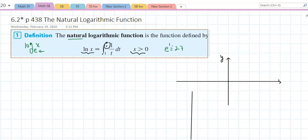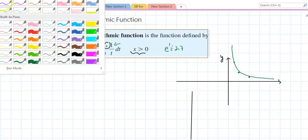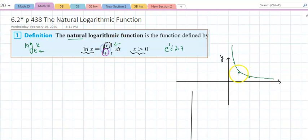This x is bigger than 0. So, if I really want to sketch a graph of this function, 1 over t, the graph looks something like this. And I am going to be looking from 1, there is 1 right there, to x.